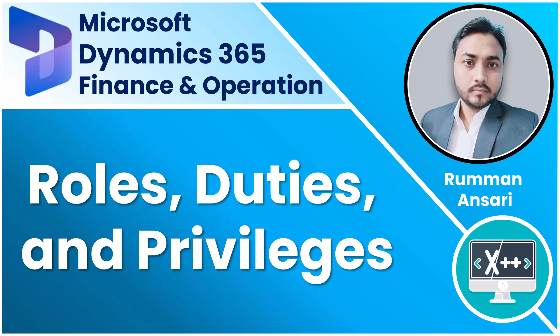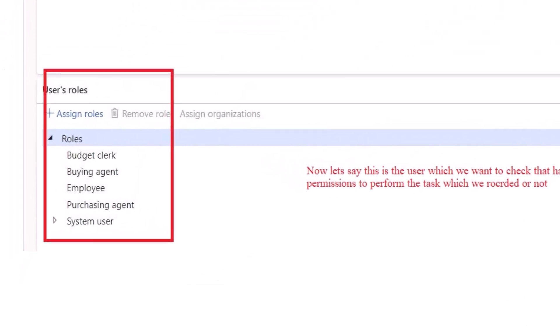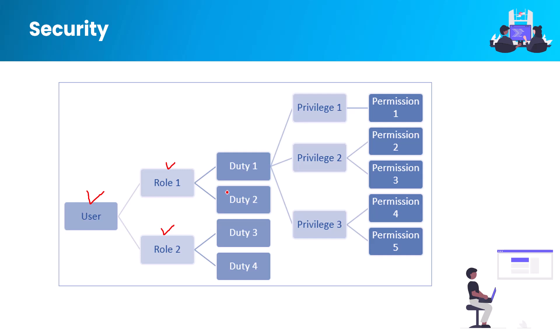In terms of security, a user cannot directly access any object — that particular user needs to have a role. One user can have one or more roles, and based on the role, they have duties assigned. One role can have multiple duties, and each duty contains different types of privileges. Those privileges determine whether the user can access a form, edit a record, or delete a record.